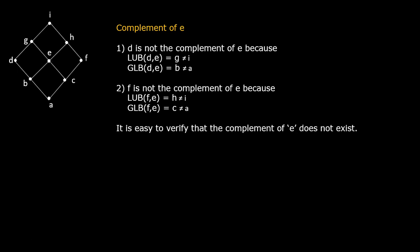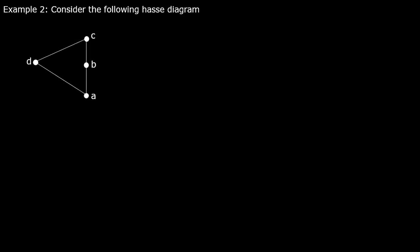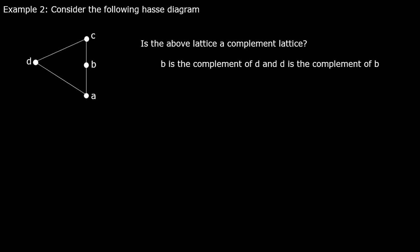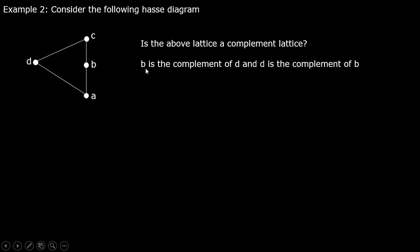Since the complement of e does not exist, the given lattice is not a complemented lattice. Now consider another example with a new Hasse diagram — again it is a lattice. Consider elements b and d: b is the complement of d and d is the complement of b, because tracing upwards the first meeting point of d and b is c, which is the greatest element.